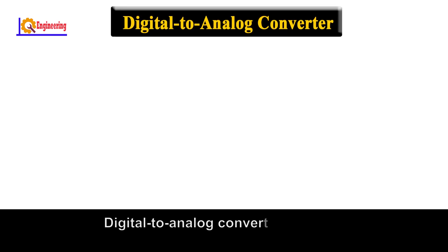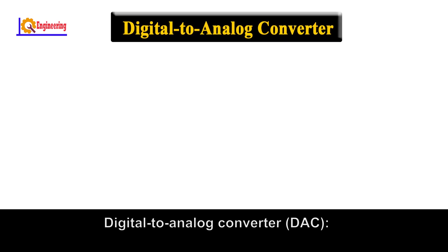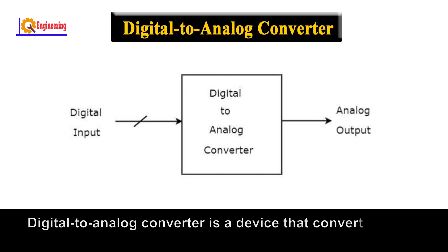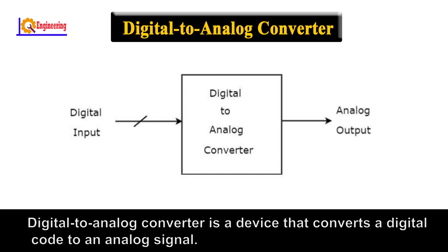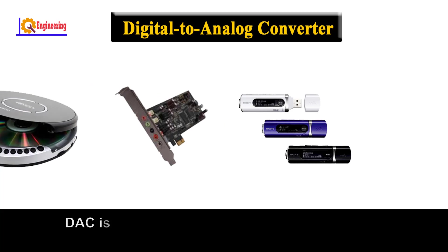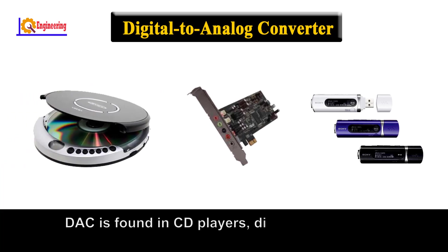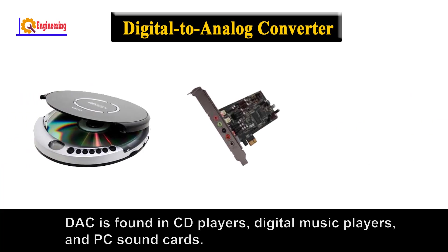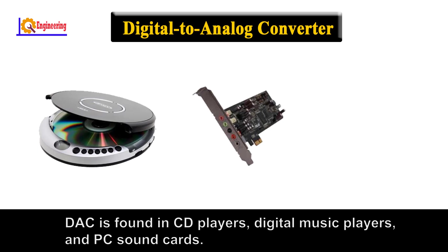Digital to Analog Converter (DAC): A Digital to Analog Converter is a device that converts a digital code to an analog signal. DACs are found in CD players, digital music players, and PC sound cards.